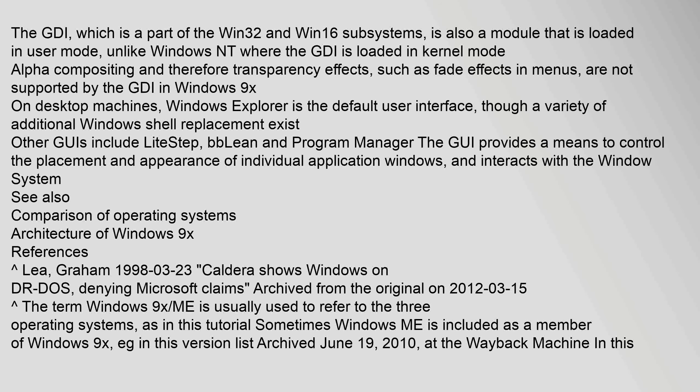The GDI, which is a part of the Win32 and Win16 subsystems, is also a module that is loaded in user mode, unlike Windows NT where the GDI is loaded in kernel mode. Alpha compositing and transparency effects such as fade effects in menus are not supported by the GDI in Windows 9x. On Windows 9x desktop machines, Windows Explorer is the default user interface, though a variety of additional Windows shell replacements exist. Other GUIs include LiteStep, BB4Win, and Program Manager. The GUI provides a means to control the placement and appearance of individual application windows.